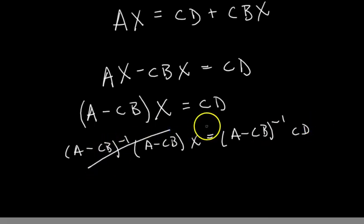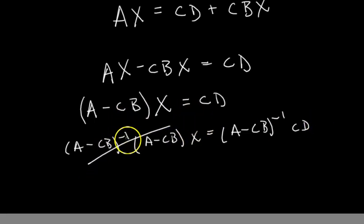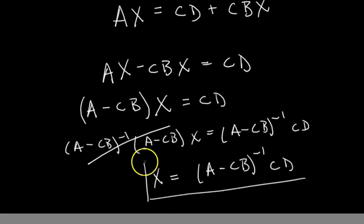And then this, boom, just cancels, right? It's equal to the identity matrix. And then the identity matrix times X is just X. So then we've done it. So our matrix X is equal to A minus CB inverse times CD. And we've got it. All right. Thanks for watching.